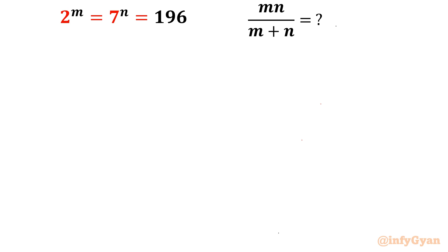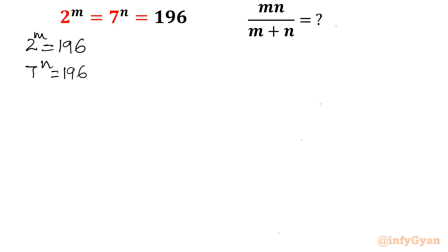Hello everyone, welcome to InfiJaan. In this very exciting and powerful video on system of exponentials, two equations are given: 2 raised to the power m equals 196, and the second equation is 7 raised to the power n equals 196. We will find out the value of the expression mn over m plus n.